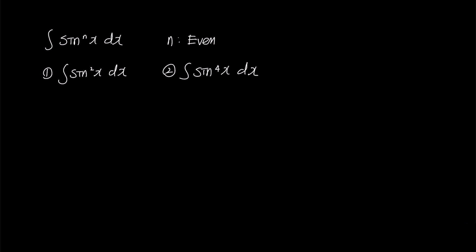When n is even, like this case, we'll need to employ two formulas. The first one is the cosine double angle formula. It can be written as cosine 2 box equals 2 cosine squared box minus 1 or 1 minus 2 sine squared box.